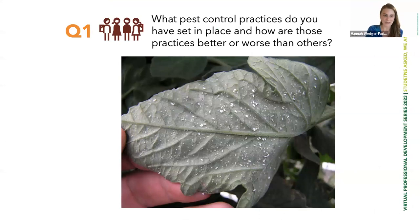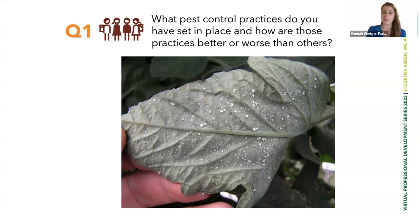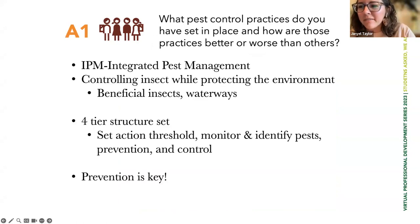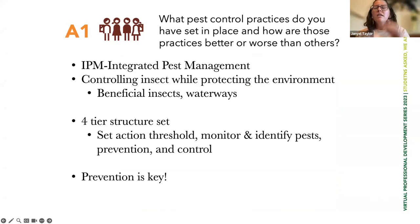Question one: what pest control practices do you have set in place, and how are those practices better or worse than others? Danielle: integrated pest management (IPM) is absolutely number one. There are old-school folks that spray insecticides at the first sign of pests, but that's no longer the way. We need to focus on IPM, which has a four-tier structure: set your action threshold, monitor and identify pests, prevention, and control. You could do a round-table discussion with students about each one.